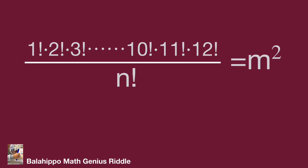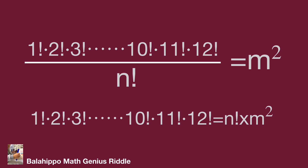Back to our question: 1 factorial times 2 factorial times 3 factorial, dot dot dot, times 11 factorial times 12 factorial, over n factorial, equals m squared. First, multiply n factorial to both sides of our equation. Then the right side becomes n factorial times m squared.